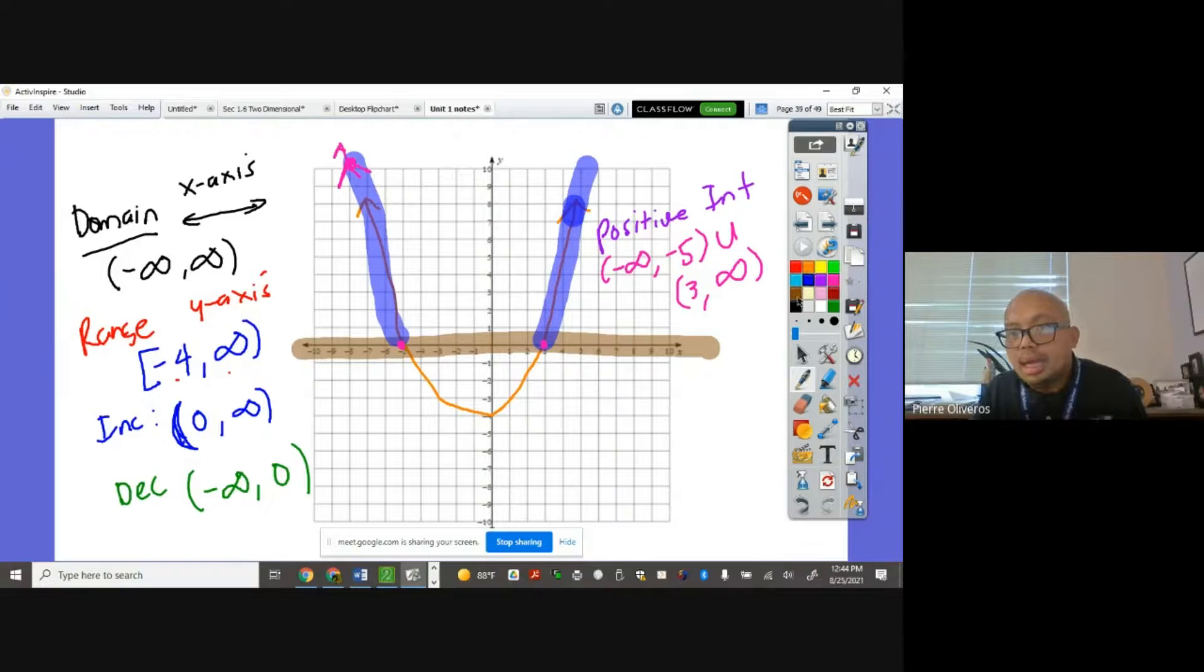Okay? And the negative interval are the green one here, the one below, that's not green, below the x-axis here. That is from the negative interval are from negative 5 up to 3. Okay? Very simple, right? Next,